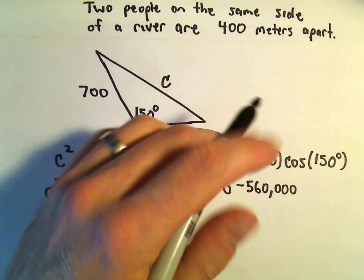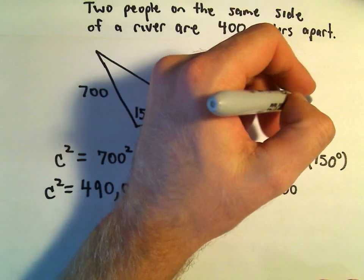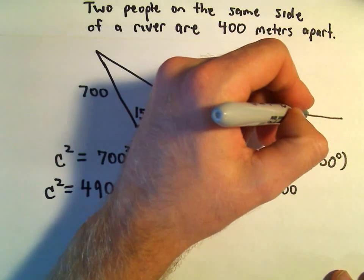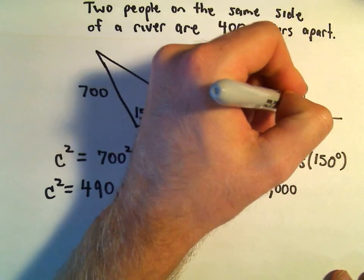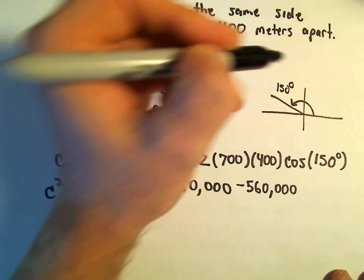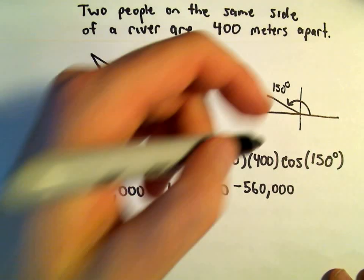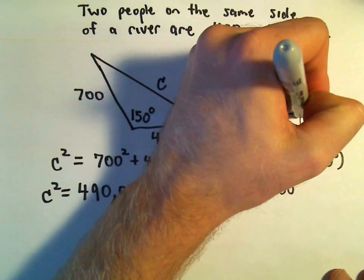Cosine of 150 degrees. I think we can probably figure that one out. So 150 degrees, that would put us in quadrant 2. The reference angle there would be 30 degrees.